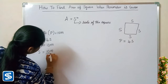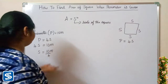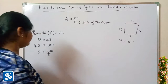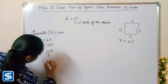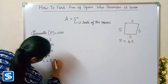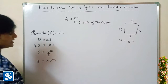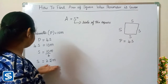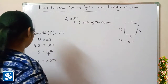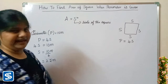So 4S is equal to 10 meters, therefore S is equal to 10 meters divided by 4. When we divide 10 meters by 4, our answer will be 2.5 meters. So the value of S is 2.5 meters. Now we have to substitute the value of S in the area formula.